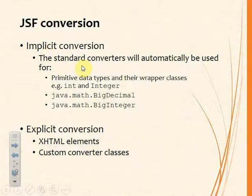There's implicit conversion and explicit conversion. Implicit conversion happens when standard converters are used — for example, if a managed bean property is of type int, the system works out the data type and employs the appropriate converter. Primitive data types are converted to their wrapper class objects: int becomes Integer, double (lowercase) becomes Double (uppercase). That handles primitive types, but for other objects such as date-time, we need explicit converters.